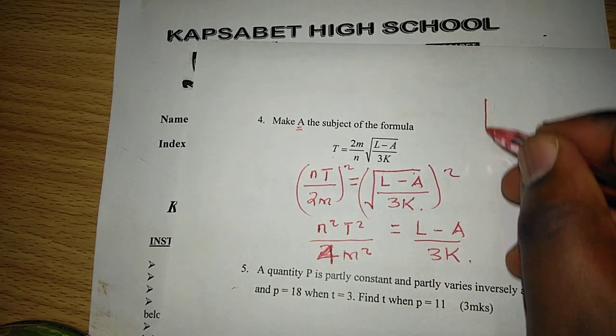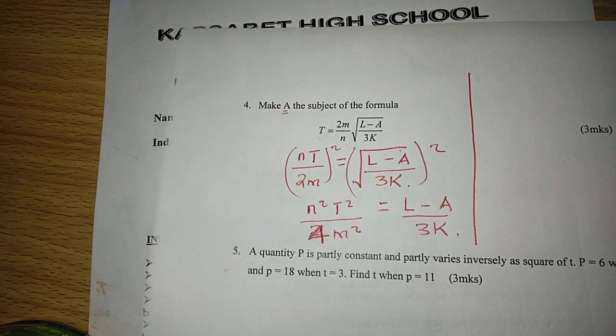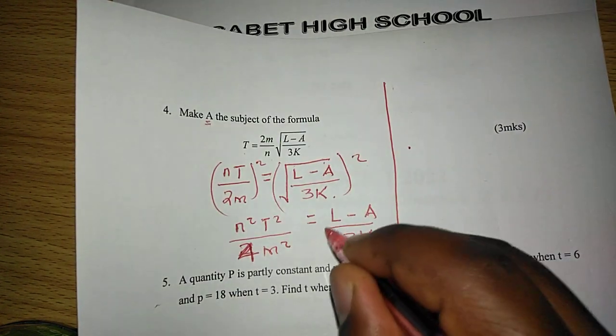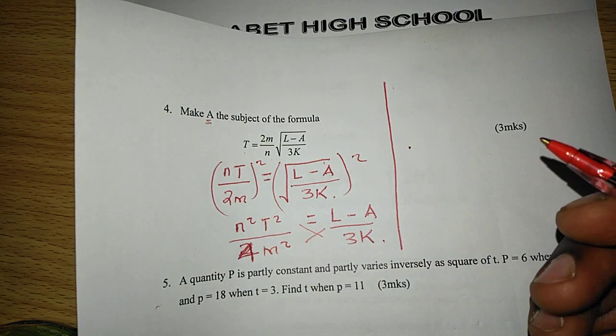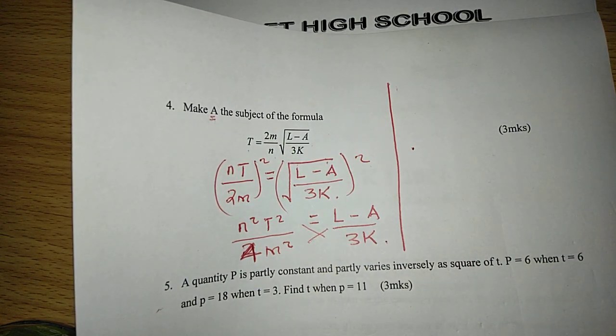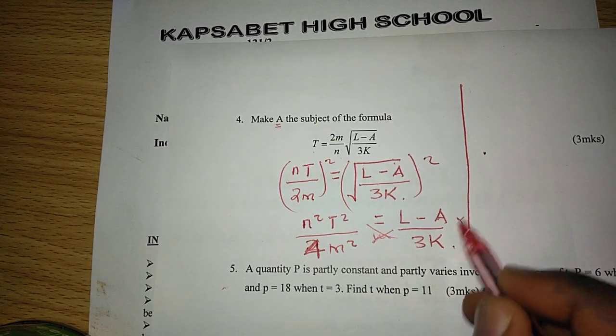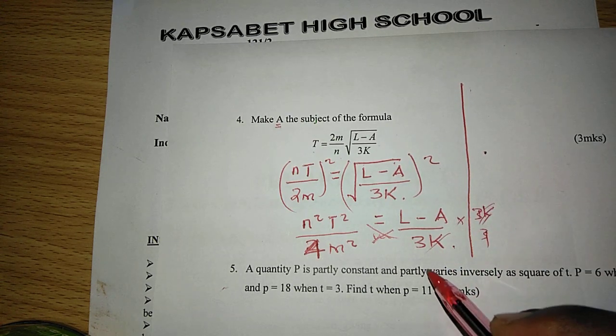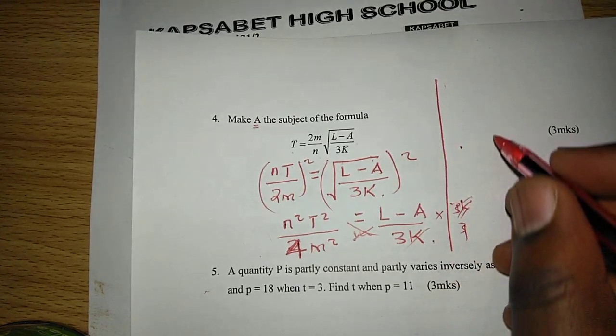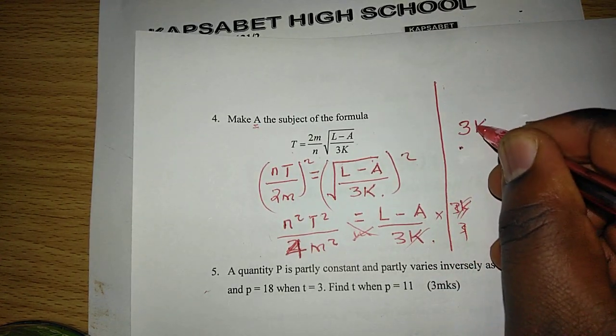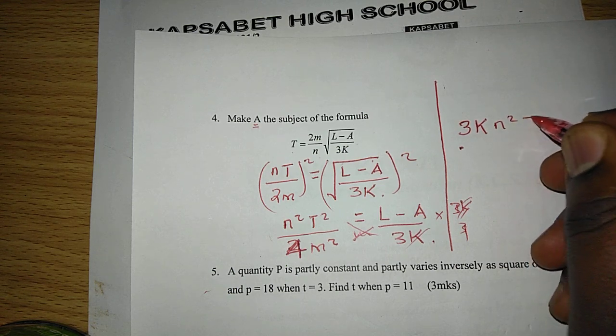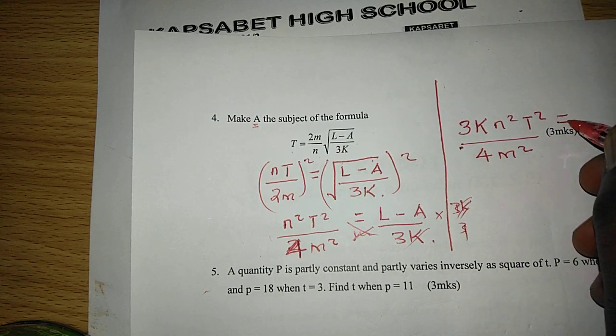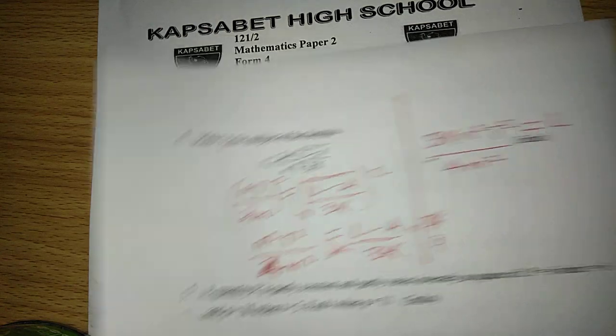However, to remain with l minus a, we can multiply through by 3k, such that on this side we will have cross multiplication. We can multiply with 3k out of 1 so that 3k cancels from this side and the 3k multiplies the other side to give us 3k. Then n squared t squared out of 4m squared, that one will be equal to l minus a.